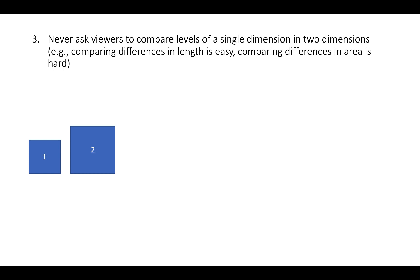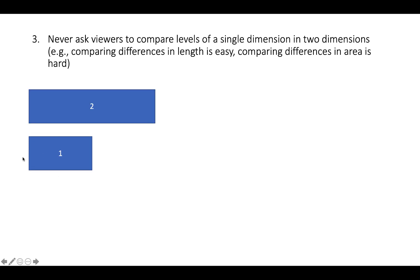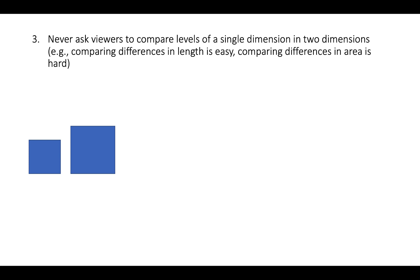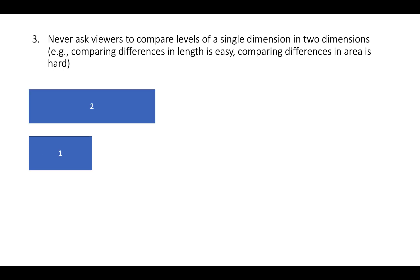Now compare that to squares of unit area one and unit area two — it's far more difficult for most people to understand that the box on the right is twice as large as the box on the left. Differences in area are useful for conveying small, medium, or large, but if we're really interested in people understanding precise differences in size, we want to compare length, not area.